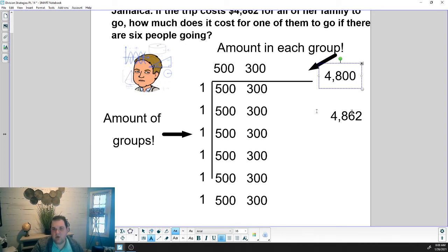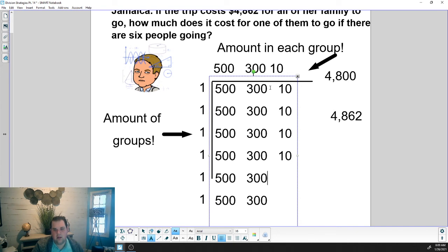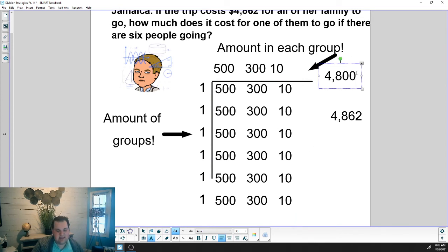Now I need 62 more in my array, so I'm going to add $10 to each. Now I'm putting $10, and now I have $4,860. I could break these $2 into cents and put those in, but I'm going to stop here for now and just show the whole dollars. In one row, one person will pay $500 plus $300 plus $10. So it is about $810 per person. Each person would cost $810.